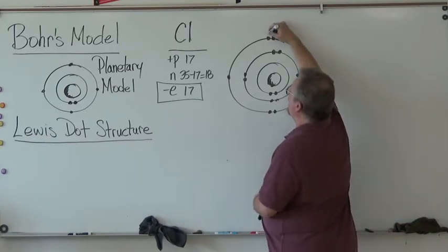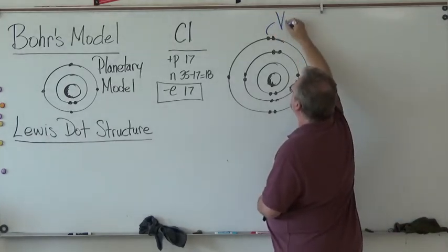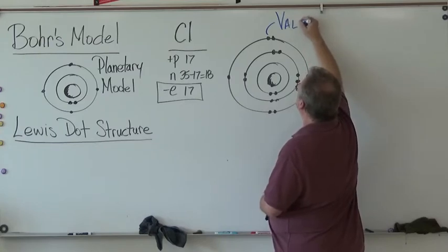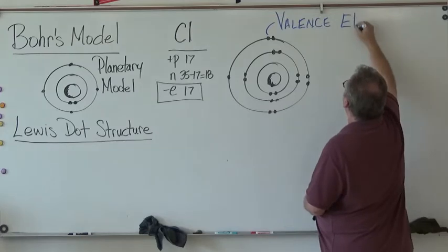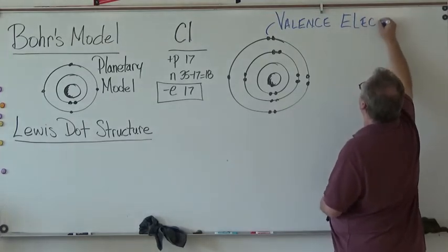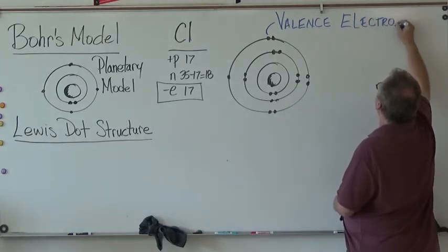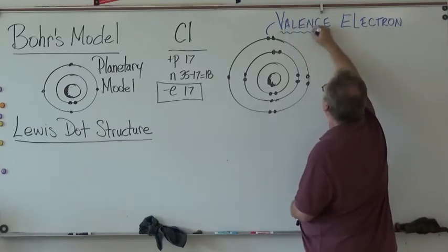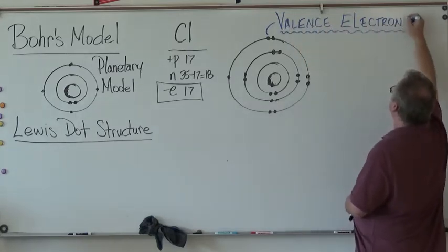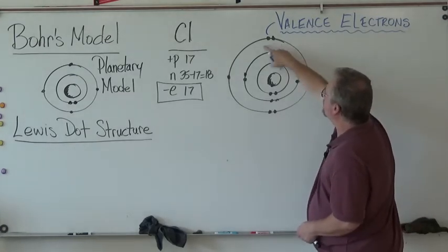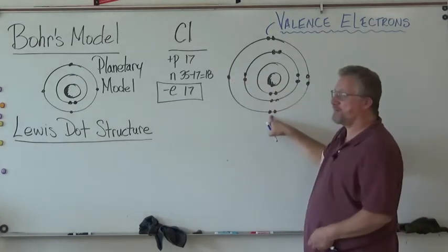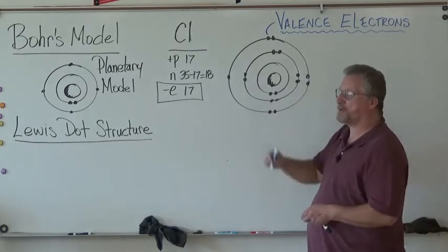Any electron that's in the outside shell is called a valence electron. That's called a valence electron. I guess we should put electrons because we've got 2, 4, 5, 6, 7. There's 7 valence electrons for chlorine.